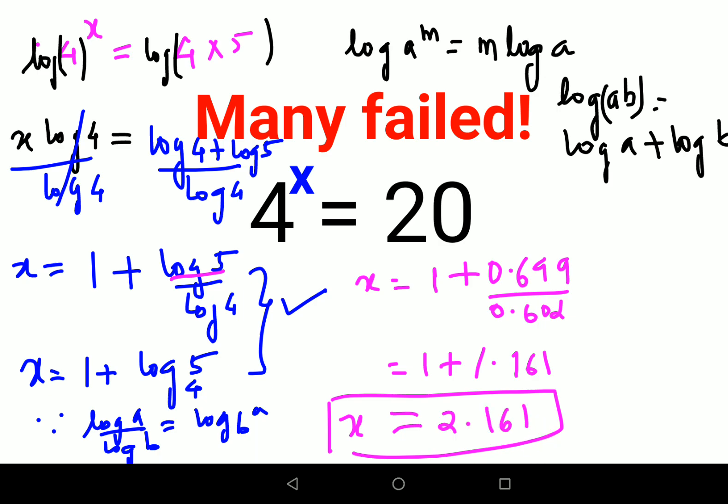Now please understand, while looking at this particular sum, it should have clicked that the value of x has to be something in 2 point something. So if you had a multiple choice question and all the options were in the form of 1 point, 2 point, 3 point, 4 point, then you don't have to do all of these workings, just select 2 point something.